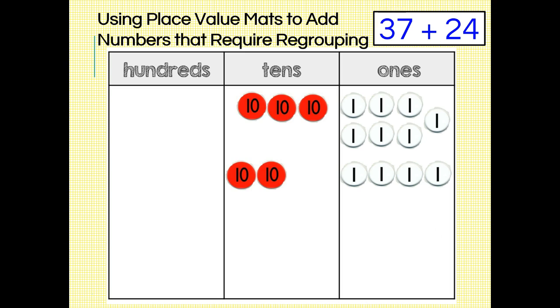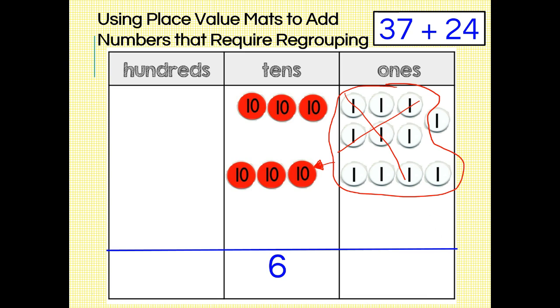Now, do you see that we have more than 10 ones disks? We need to regroup 10 of our ones into a tens disk so that we have nine or fewer ones disks. Let's take this group of 10 here and trade them for a tens disk. Now we can go ahead and add our place value columns. We have six tens and one one, so 37 plus 24 equals 61.